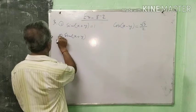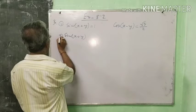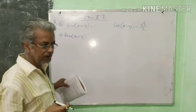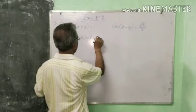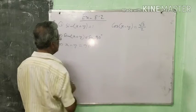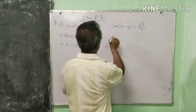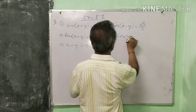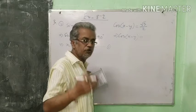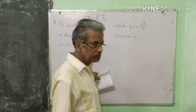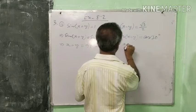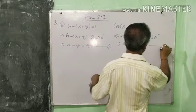sin(x+y) equals 1. Which standard angle has the value 1 for the trigonometric ratio sine? It is 90 degrees. So sin(x+y) equals sin 90 degrees, giving x+y equals 90 degrees — equation number 1. For cos(x−y) equals root 3 by 2, cosine 30 degrees equals root 3 by 2, so x−y equals 30 degrees — equation number 2.